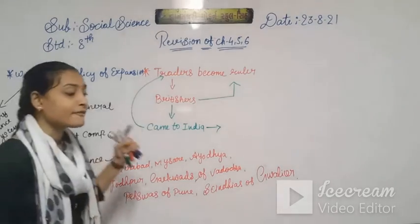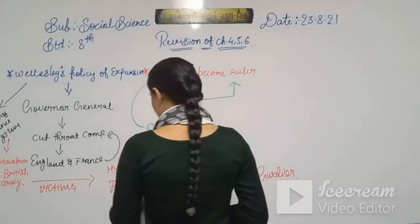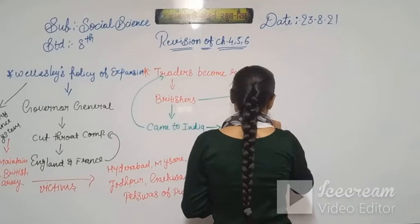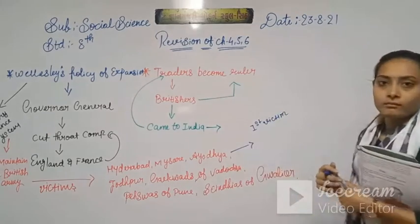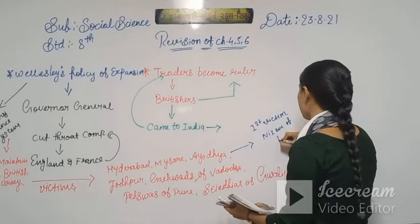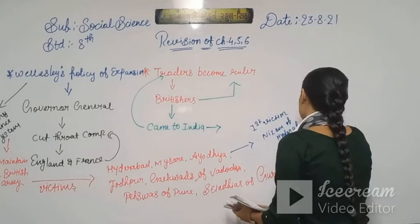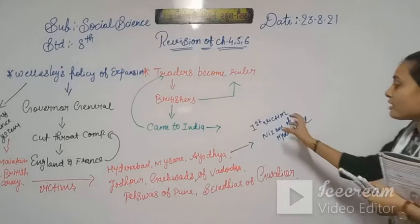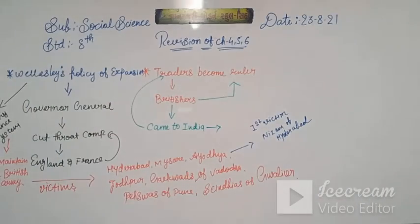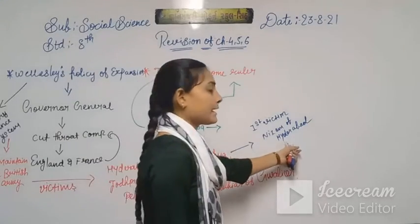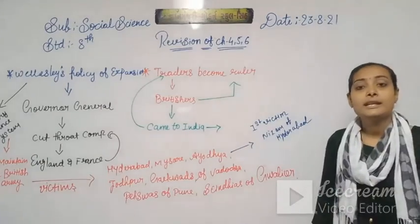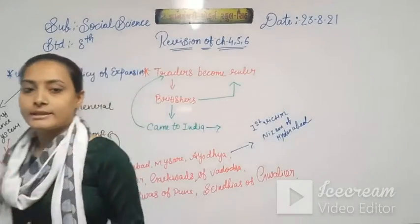So your answer is Nizam of Hyderabad. Who was the first victim of this system? That is Nizam of Hyderabad. Nizam of Hyderabad was the first victim of the Subsidiary Alliance System. Then Mysore and Awadh. Then Thanjavur and Karnatam — the British army dealt with them. They are also part of the Subsidiary Alliance System.